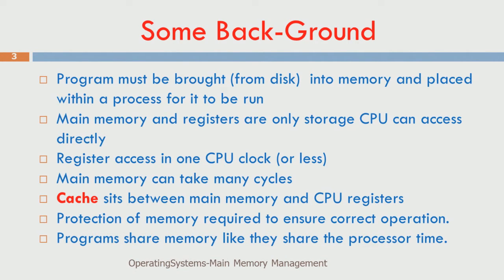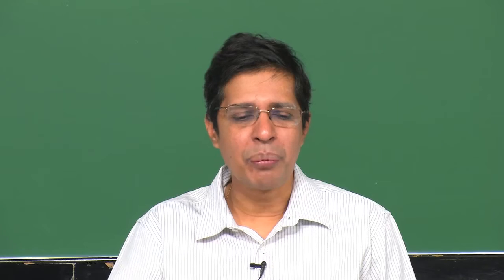The main memory and registers are the only storage the CPU can access directly — the CPU cannot access the disk. Register access can happen within one CPU clock or less. Main memory can take many cycles, while the cache sits between registers and main memory, taking a couple of cycles.